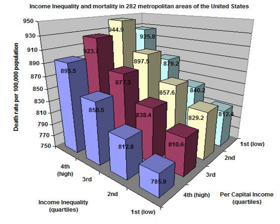Healthy People 2020 is a website sponsored by the US Department of Health and Human Services, representing the cumulative effort of 34 years of interest by the Surgeon General's Office and others. It identifies 42 topics considered social determinants of health and approximately 1,200 specific goals considered to improve population health. It provides links to current research available for selected topics and identifies and supports the need for community involvement considered essential to address these problems realistically.